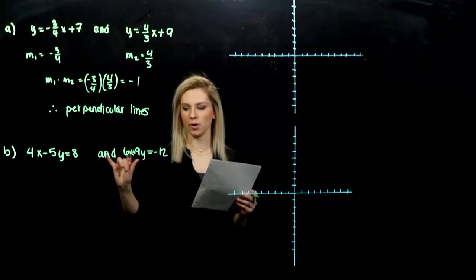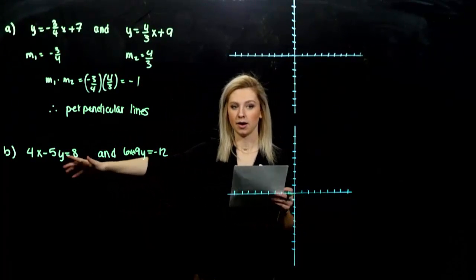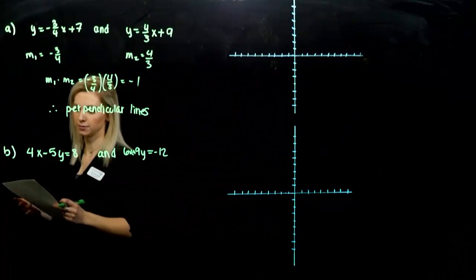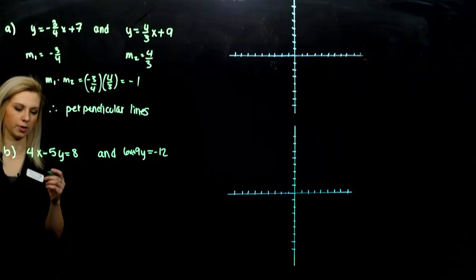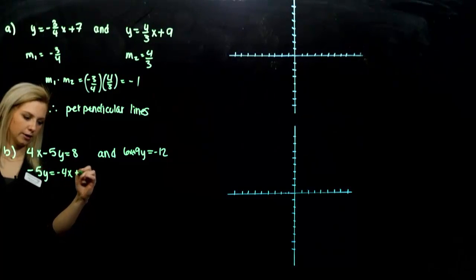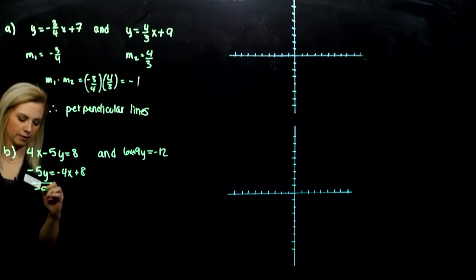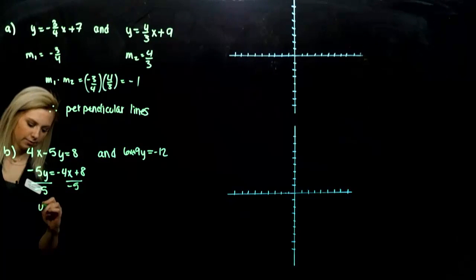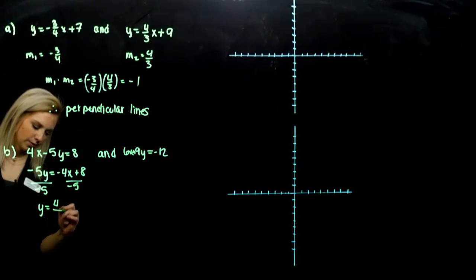The second case, we have to do a little bit more work because they're not isolated. Y is not isolated. So we need to solve for the point slope form first. So over here, we need to subtract 4x from both sides. Divide by negative 5. Y was 4 fifths x minus 8 fifths.